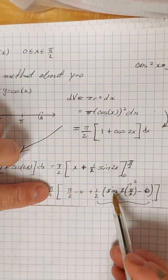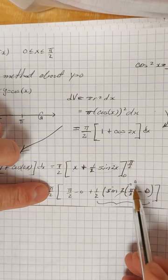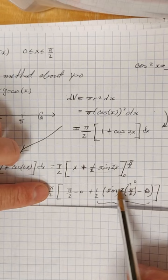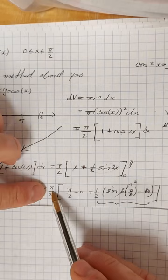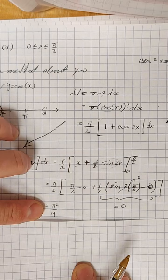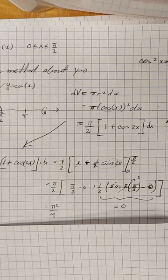For the sine term, plugging in pi over 2 into 2x gives sine of pi, which is 0, and sine of 0 is also 0. So this term contributes nothing to the overall value. We're left with just the upper limit on the x term, and the lower limit cancels. So we get pi over 2 times pi over 2, which gives pi squared over 4 — or equivalently, (pi/2) squared.